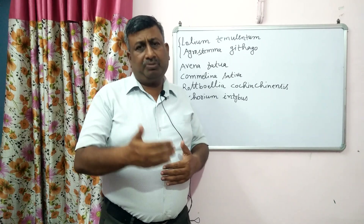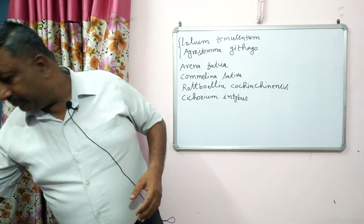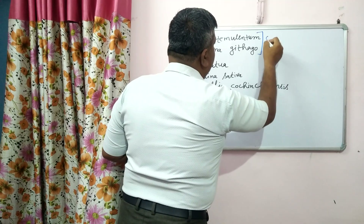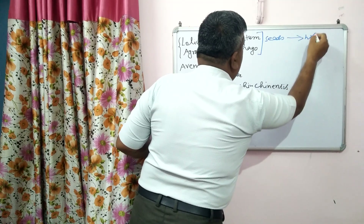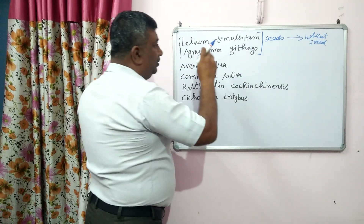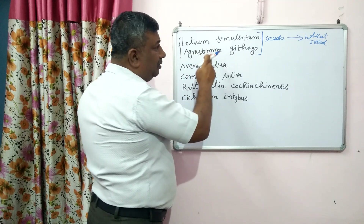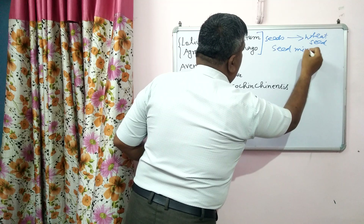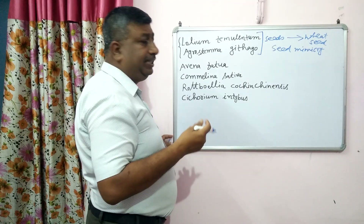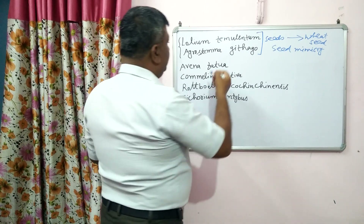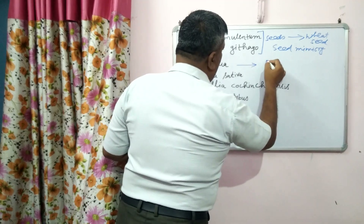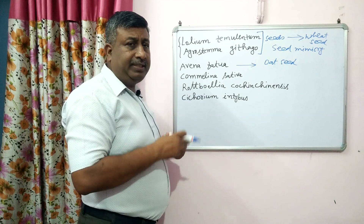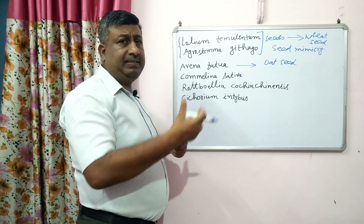Here are some weed names showing seed mimicry: Lolium, Temanaltum, Agrostemma githago — the seeds of these weeds resemble the crop seed; they are similar in size and shape. This is called seed mimicry because the seed looks like a crop seed and they contaminate the crop seed, making them very difficult to separate. Similarly, Avena fatua mimics the oat seed — when wild oat seed is mixed with oat crop seed it is very difficult to separate, and they grow with the crop the next season.